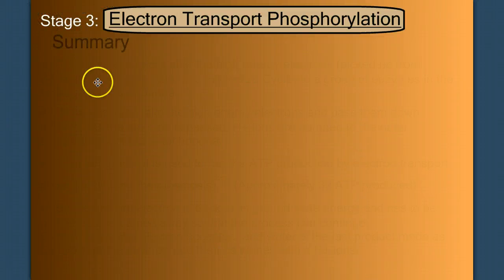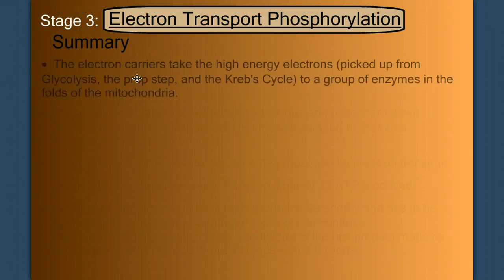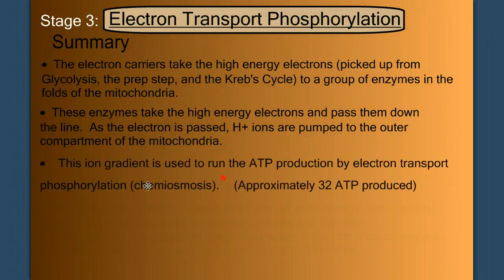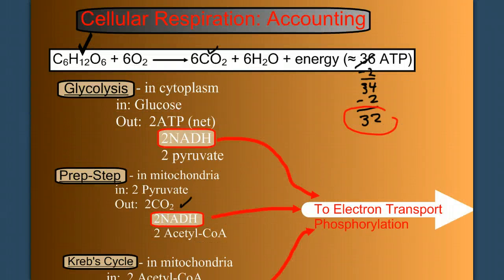Let's quickly summarize. In electron transport phosphorylation, electron carriers take the high-energy electrons picked up during glycolysis, the prep step, and Krebs cycle—the NADH and FADH2—to a group of enzymes in the folds of the mitochondria. These enzymes take the high-energy electrons and pass them down the line. As the electron is passed, hydrogen ions, or protons, are pumped to the outer compartment of the mitochondria. This ion gradient is used to run the ATP production by electron transport phosphorylation, or chemiosmosis, and we produce approximately 32 ATP.